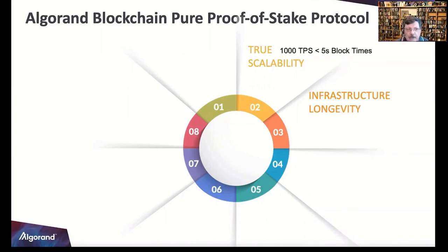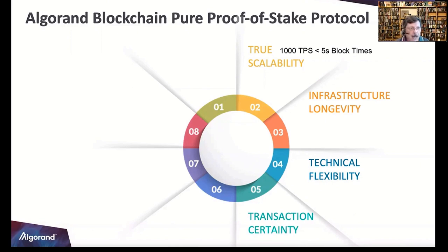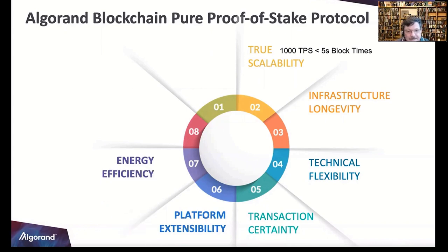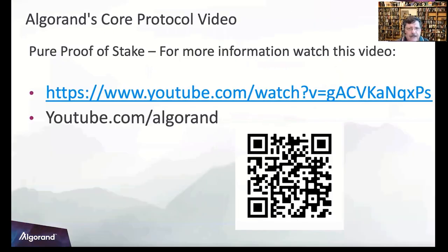Infrastructure longevity: everything is open sourced so you can see our consensus model — no questions. Technical flexibility: lots of SDKs by Algorand and the community. A Unity SDK came out just this past week. Energy efficient: you can run on a Raspberry Pi. Cost efficient: under a penny per transaction. True security built right into the blockchain. There's also a nine-minute homework video on the core Pure Proof of Stake protocol.